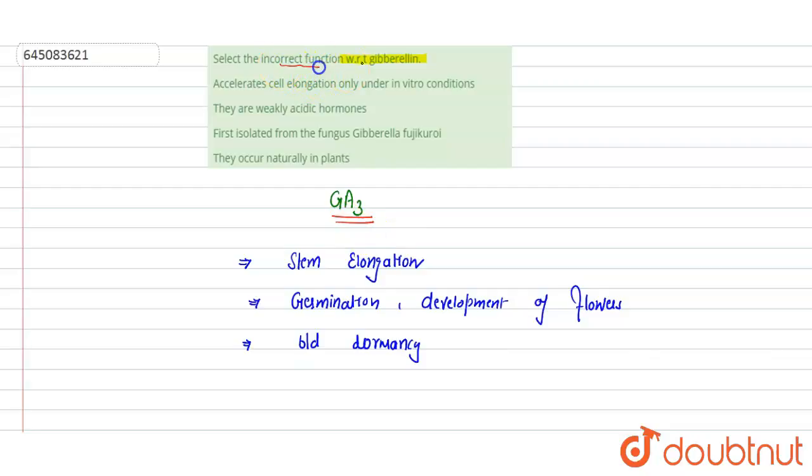First statement says accelerate cell elongation only under in vitro condition. This is incorrect function because these are naturally occurring hormones, so definitely if it is a naturally occurring hormone, their function is also related to naturally occurring. These are not only in vitro means under lab condition, so this is incorrect statement.